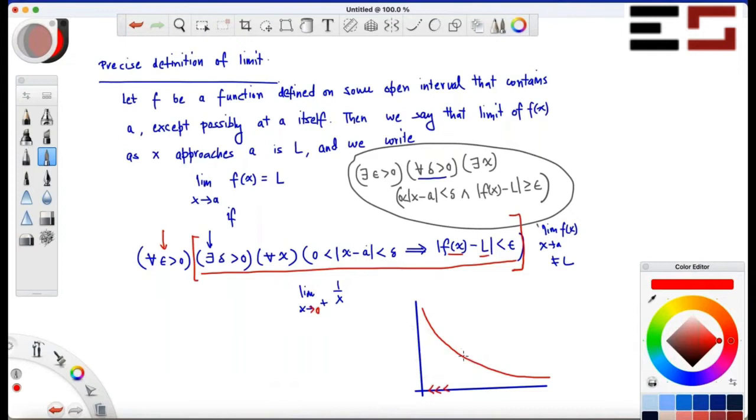Which is 1 by X, and I would like to see where is this value approaching? What do you think about this? Where is this value approaching as X approaches zero from the right?